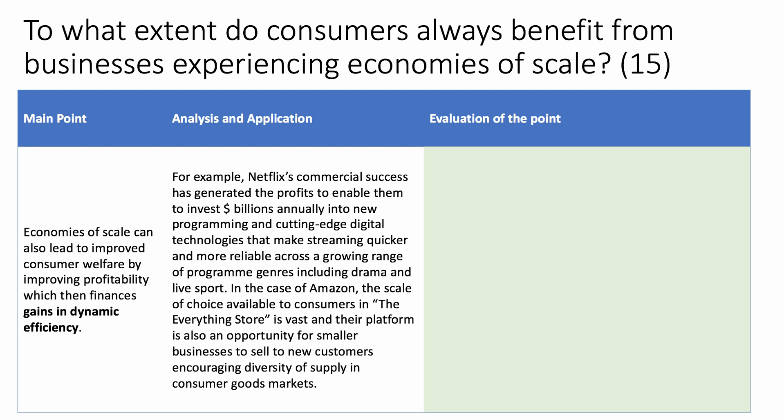The streaming is quicker and more reliable, across a wide variety of genres including drama — The Crown — and live sports such as Premiership football. In the case of Amazon, the truly incredible scale of choice available to consumers in what Brad Stone called 'the everything store' is simply vast, and their platform is also potentially an opportunity for smaller businesses to sell to customers, encouraging diversity of supply. So economies of scale generate higher profits, and those profits are a means by which technologies can improve and consumer choice can increase — gains in dynamic efficiency.